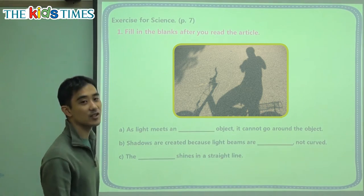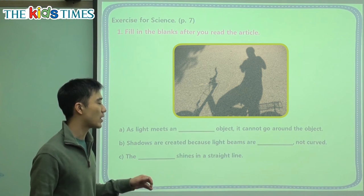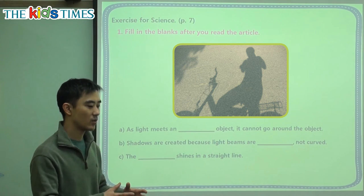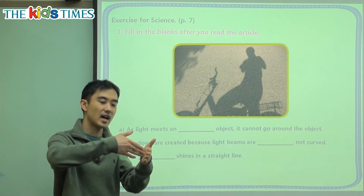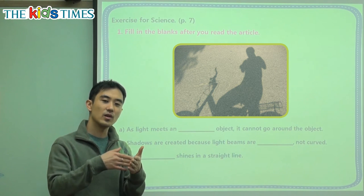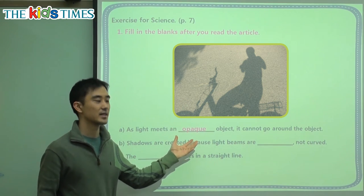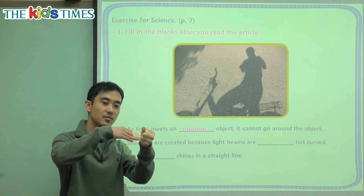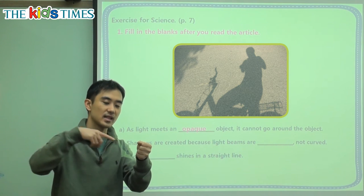We have three exercises here. A: As light meets a blank object, it cannot go around the object. The object can be a car, a person, a building — something. Is it a 투명한 object, like a clear window or glass? Or is it an opaque object? Opaque means 투명하지 않는. When light meets a 투명하지 않는 something, it cannot go around like this. This is opaque because it's not 투명.